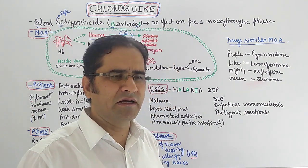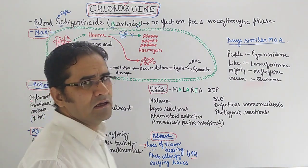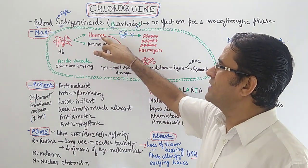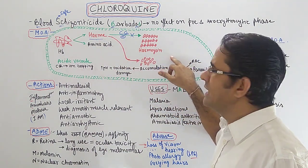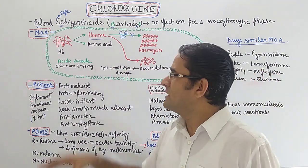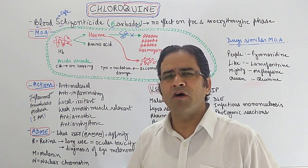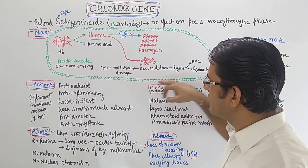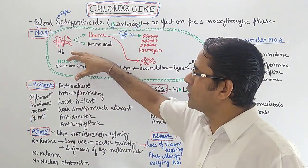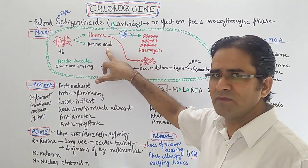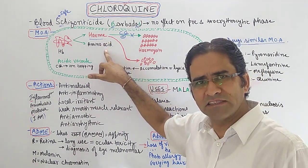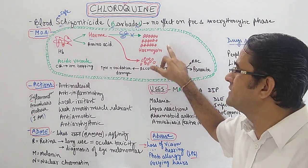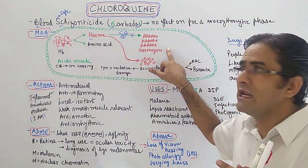Mechanism of action in one sentence: chloroquine inhibits the polymerization of heme into hemozoin. To understand this, remember that the causative organism of malaria is Plasmodium. For nutrition, it takes up the hemoglobin of the host inside its acidic vacuole. This hemoglobin is broken down into heme and amino acids. The amino acids are utilized by the Plasmodium.